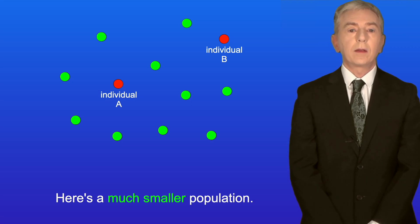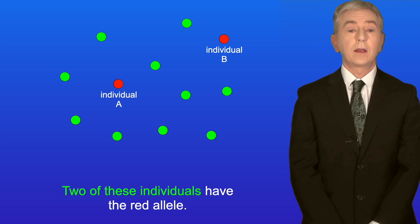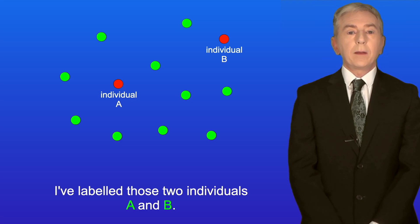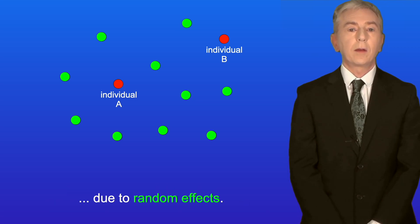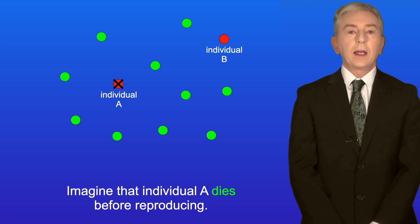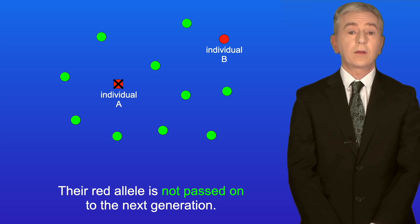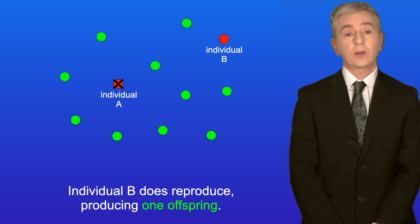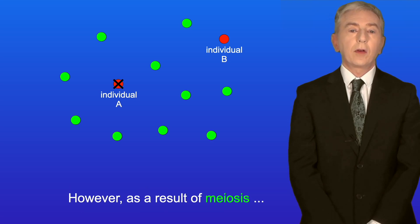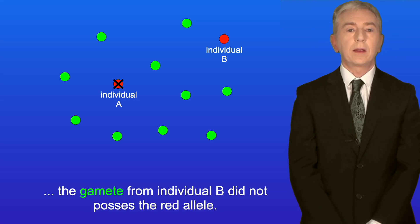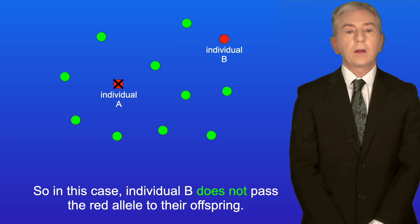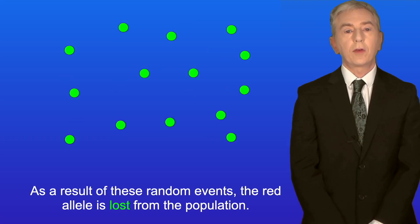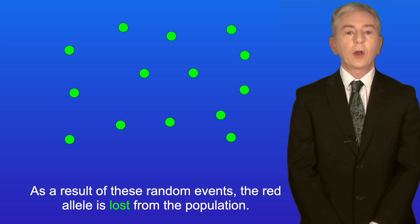In a much smaller population, two individuals — labeled A and B — have the red allele. In a small population, allele frequency can change dramatically due to random effects. Imagine individual A dies before reproducing, so their red allele is not passed on. Individual B does reproduce, producing one offspring, but as a result of meiosis the gamete from individual B did not possess the red allele. So as a result of these random events, the red allele is lost from the population. The same effect could occur if an individual was infertile and could not reproduce.